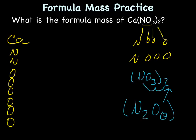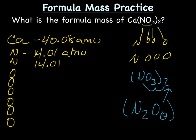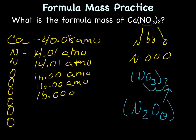So now let's go to the periodic table and figure out the average atomic mass of each of those atoms. Calcium is 40.08 amu. Nitrogen is 14.01 amu, and we have two of those. And oxygen is 16.00 amu, and we have six of those.